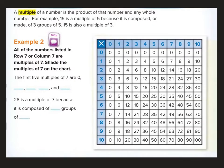Example 2. Oh here we got a little vocabulary word. Oh yes multiple. That's those count by numbers things. All of the numbers listed in row 7 or column 7 are multiples of 7. Shade in the multiples of 7 on the chart. So if I go to 7: 0, 7, 14, 21, 28, 35, 42, 49, 56, 63, 70. Multiples.